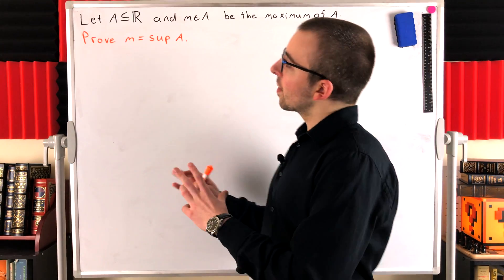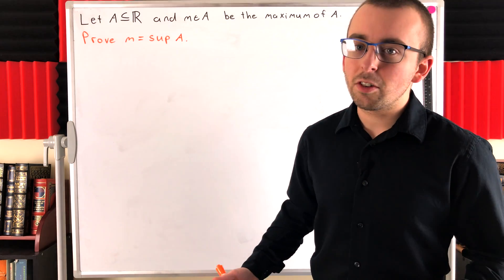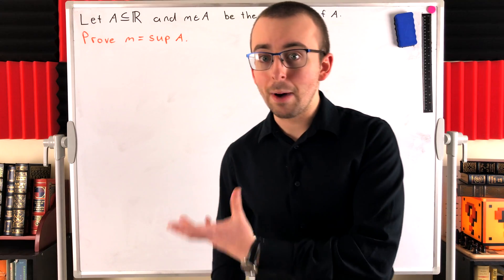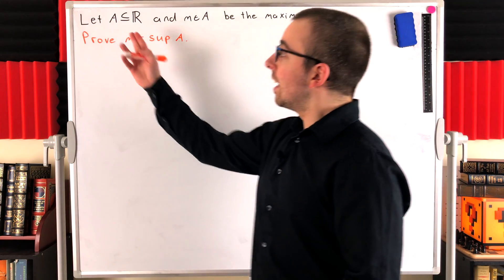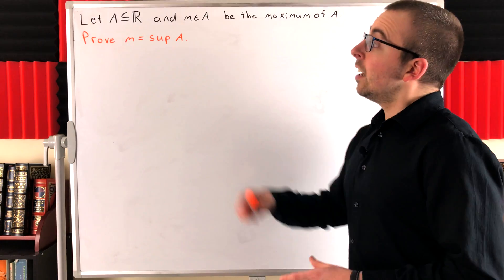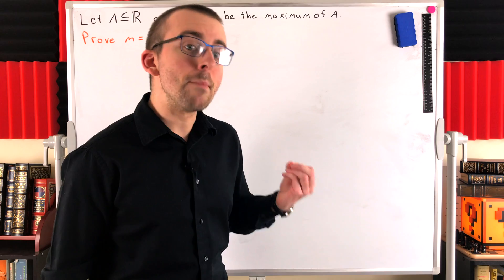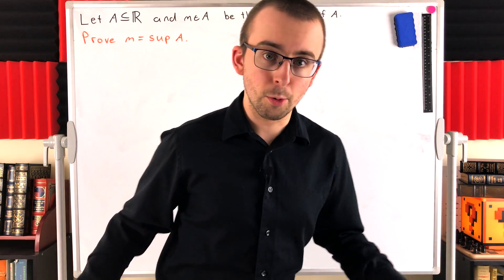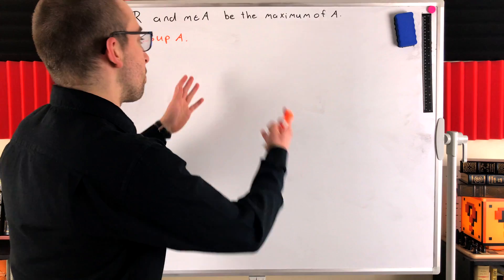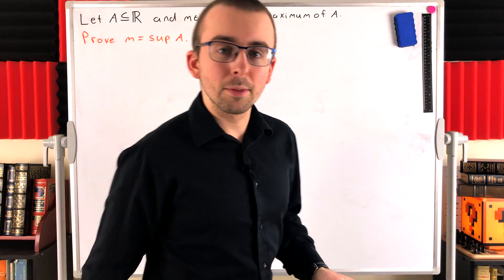Now I want to point out, suppose we've got a real valued function. Consider its range, the image of the domain, all the elements that get mapped to by the function. Its range is a subset of the real numbers. So this proof will apply just as well to a function. If a function takes on some maximum value, that's the supremum, and this proof is sufficient to show that.